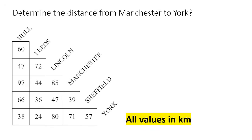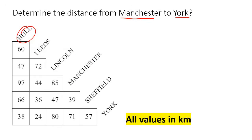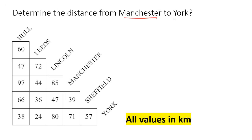So our first example: determine the distance from Manchester to York. These are places in a certain area — there's a little town called Hell, a little town called Leeds, Manchester, and York. This is all somewhere in England. They want to know what is the distance from Manchester to York.